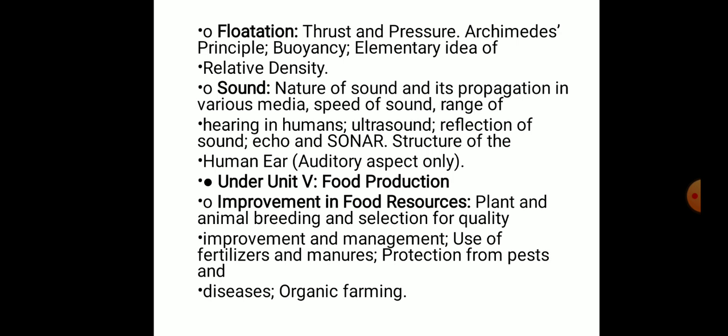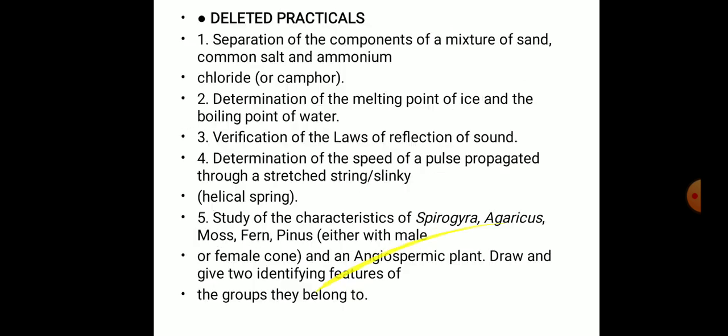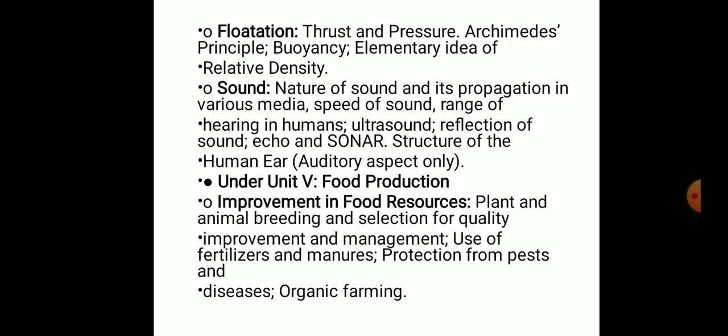Under Unit 5, Food Production, the following are deleted from 'Improvement in Food Resources': plant and animal breeding and selection for quality improvement and management, use of fertilizers and manures, protection from pests and diseases, and organic farming.